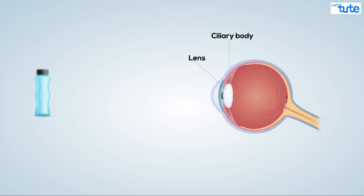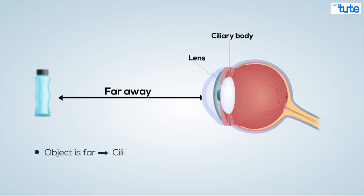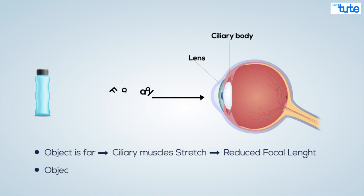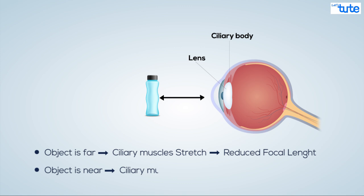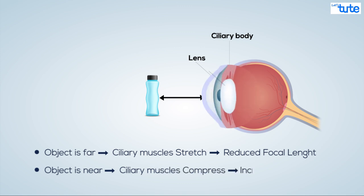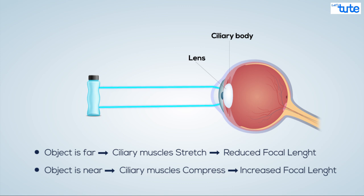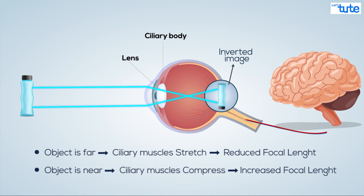When you are looking at something which is far away, the ciliary muscles stretch the lens and reduce the focal length, which makes the object clear. And when the objects are close, the ciliary muscles compress and increase the focal length. When the light falls on the lens, it converges and forms an inverted image on the retina. This image is later made erect in the brain, and that's how we see the world.